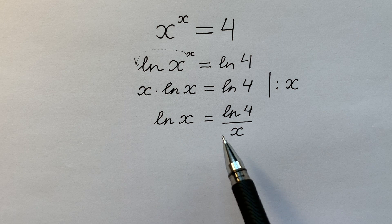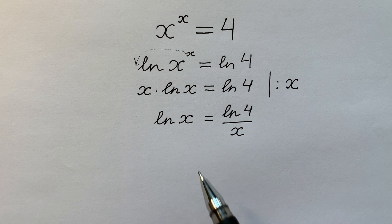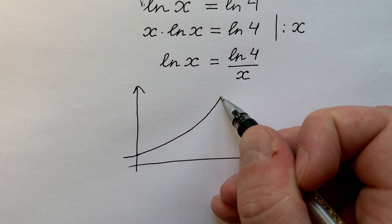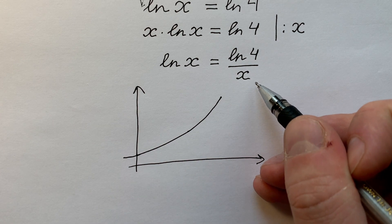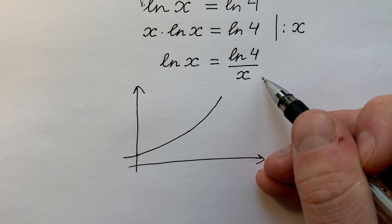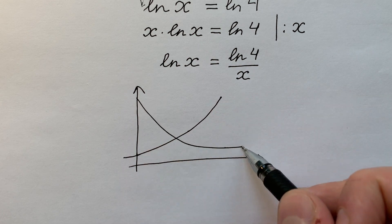Look at the left and the right side of this equation. On the left side we see a monotonically increasing function like this way. But on the right side we see a monotonically decreasing function like this way.